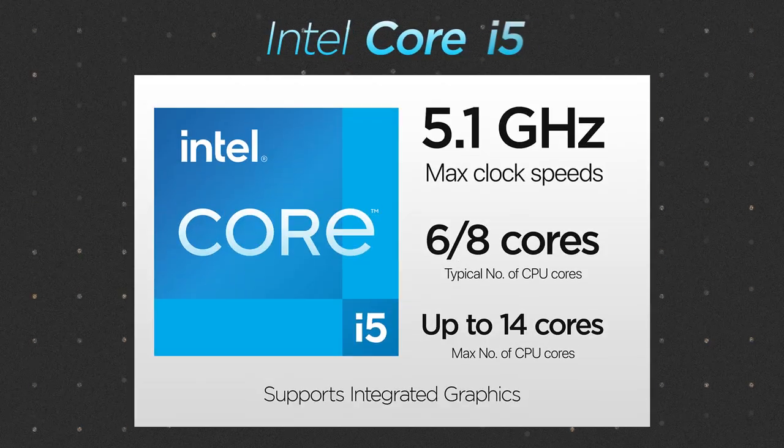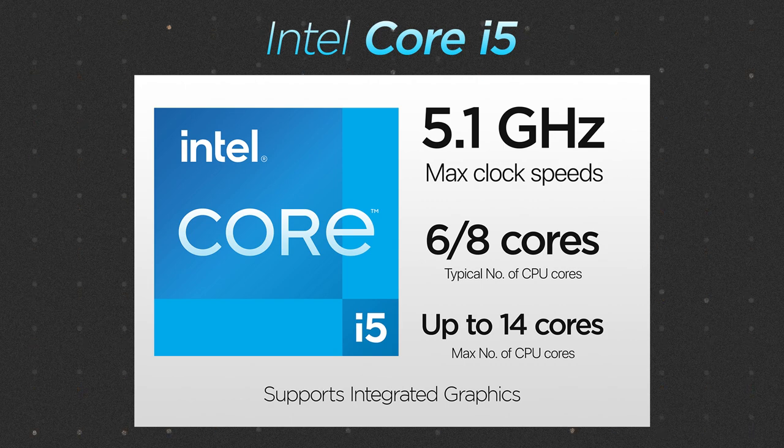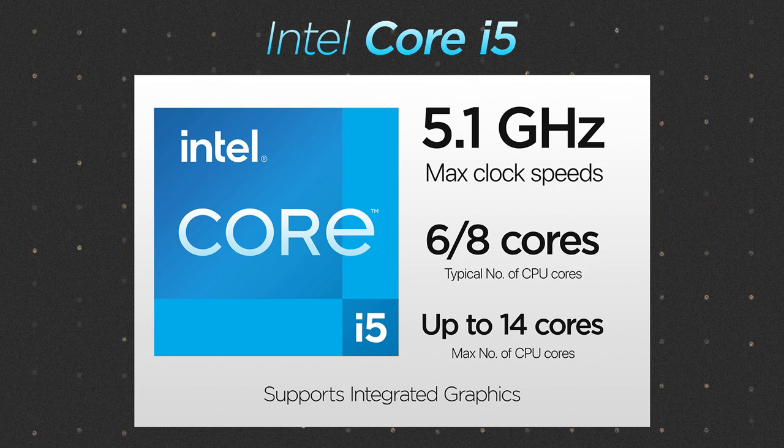Next we have the Core i5 family of processors, designed for users who need a bit more performance than the i3 can offer. Core i5 processors typically have six or eight cores on laptops, but can feature 12 or even 14 cores on desktop chips, with clock speeds of up to 5.1 GHz. These processors also have integrated graphics that are generally more powerful than those in Core i3s, making them a better choice for gaming or other graphically intensive tasks. Core i5s are a good choice for users who need a balance of performance and affordability.